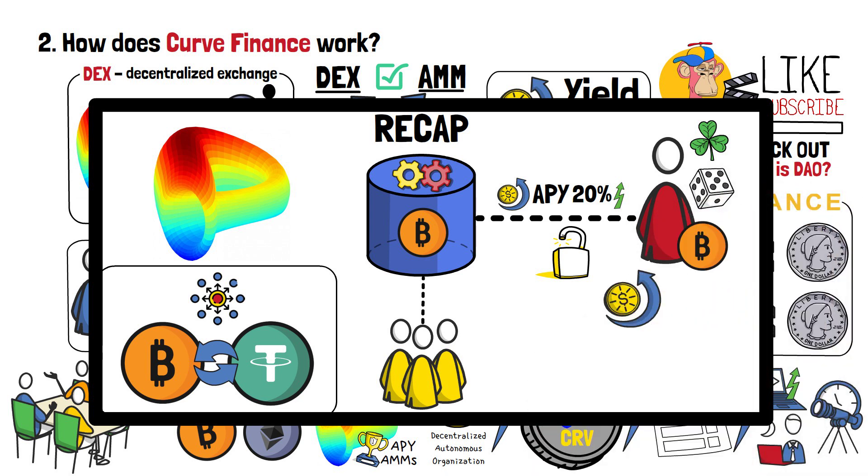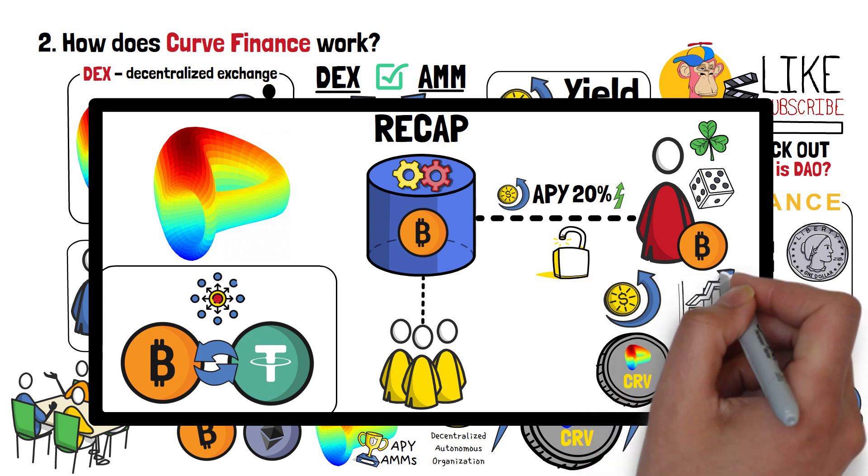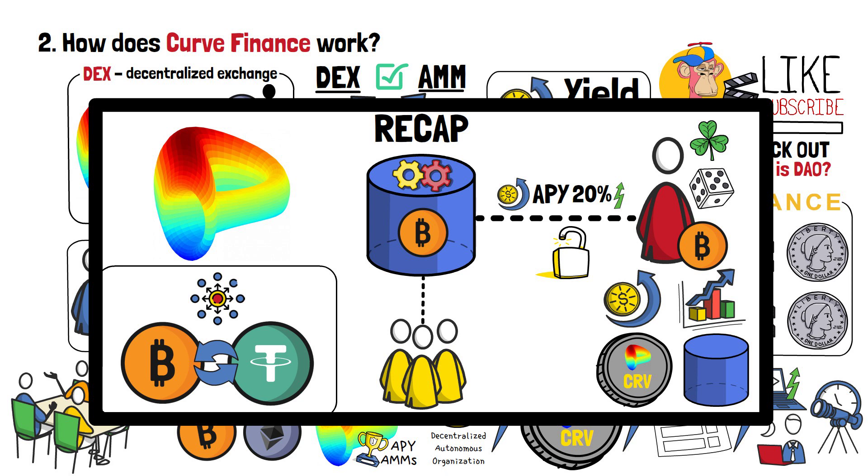Curve Finance has base APYs, as well as rewards that can be paid out in CRV tokens. All of these numbers will vary daily, and depending on the pool that you want to delegate your cryptocurrencies to.